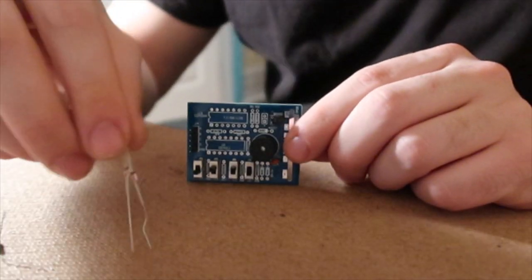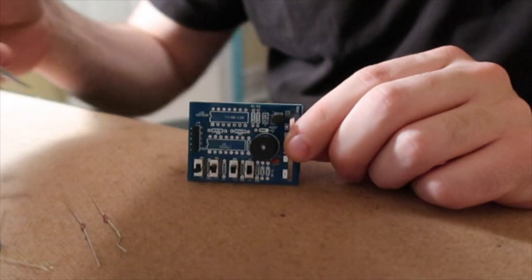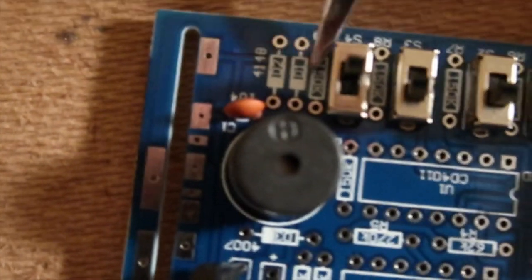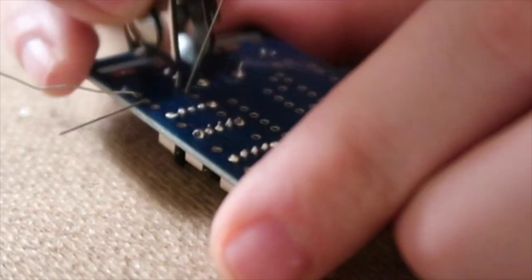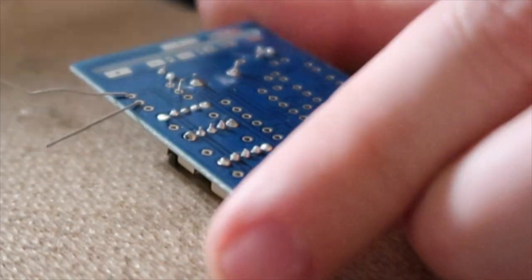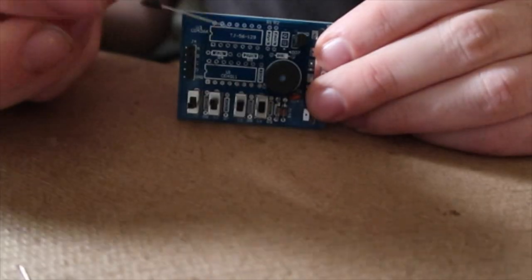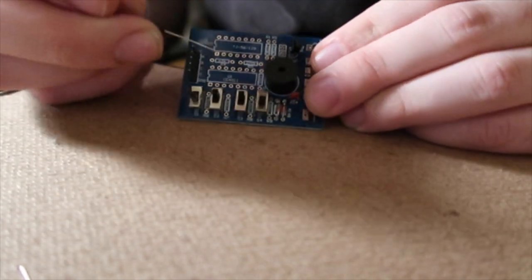These two diodes go in position D1 and D2 over here. The black ring on the diode correlates with this white ring over here. The other diode goes in position Q3.